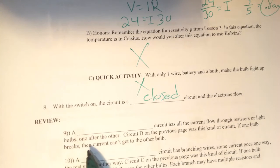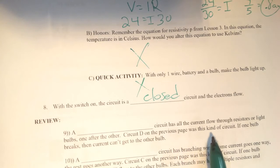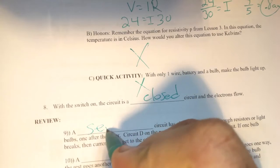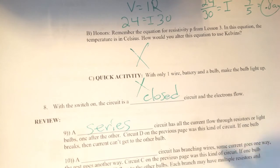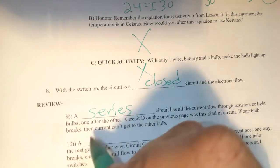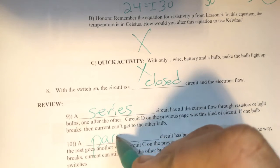Number 9, review. A blank circuit has all the current flows through the resistors or light bulbs one after the other. That is called a series circuit. Number 10, a parallel circuit has branching wires.